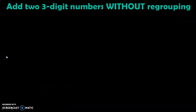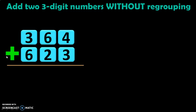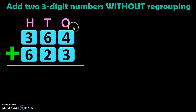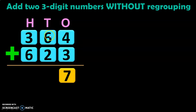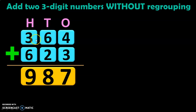Add two three-digit numbers without regrouping. Here we have 364 plus 623. First, write down the place values: ones, tens, and hundreds. Then start adding from the ones. Four plus three is seven. Six plus two is eight. Three plus six is nine. So, 364 plus 623 will give you the answer 987.